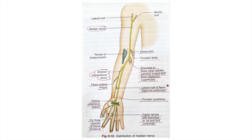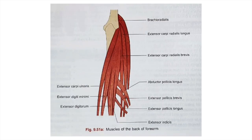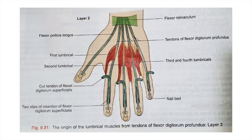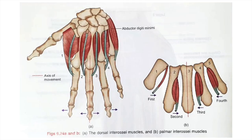All of this innervation — the median nerve including the anterior interosseous nerve — will be lost if the median nerve is injured above the elbow. The antagonistic muscles on the dorsum are the extensor group, and the 12 intrinsic muscles include four lumbricals, four palmar interossei, and four dorsal interossei.